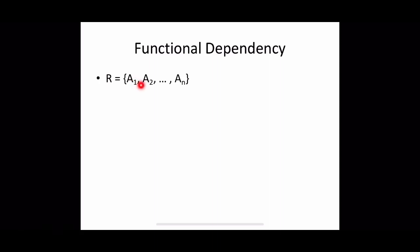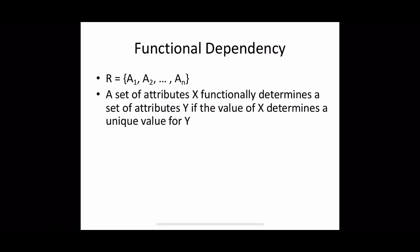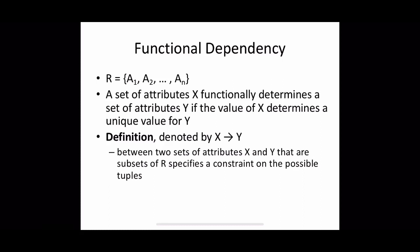Suppose our relational database schema has n attributes A1, A2, ... An and the schema is denoted by capital R. A set of attributes X functionally determines a set of attributes Y if the value of X determines a unique value for Y. That is denoted as X → Y, meaning X functionally determines Y.